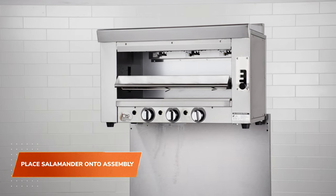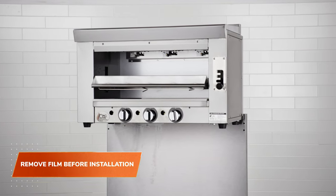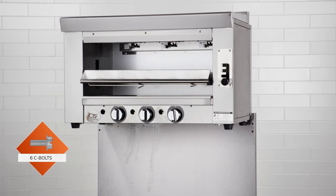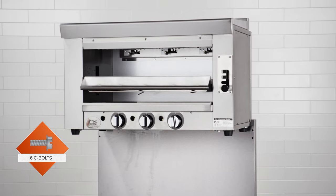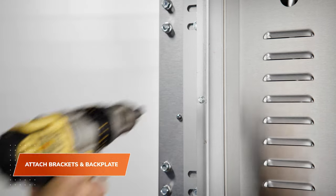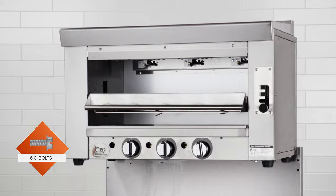Lift the Salamander and place it into the backsplash assembly. Use six C-bolts to secure the support brackets and back plate assembly to the back of the range. Then, secure the support brackets and back plate assembly to the back of the Salamander using six C-bolts.